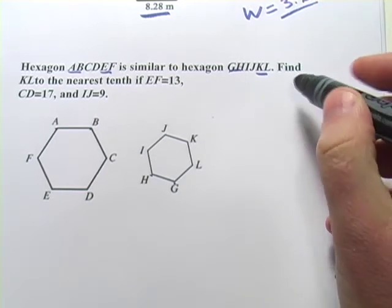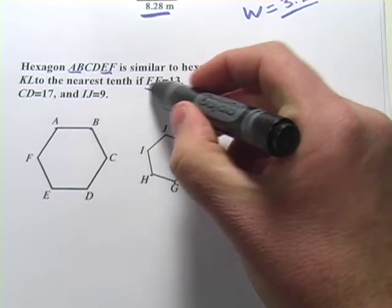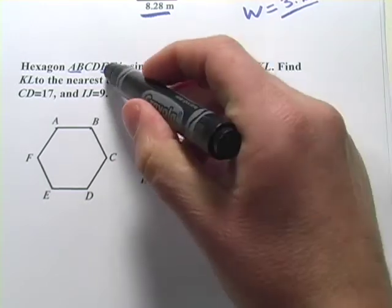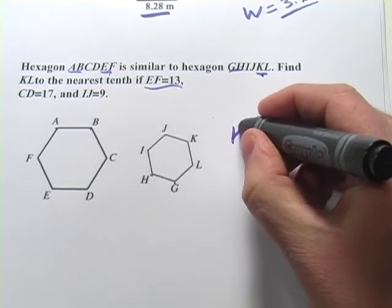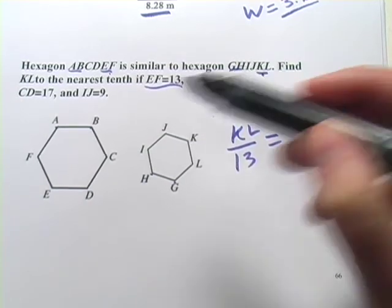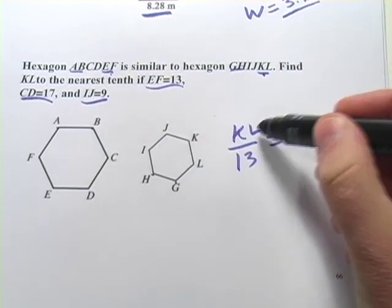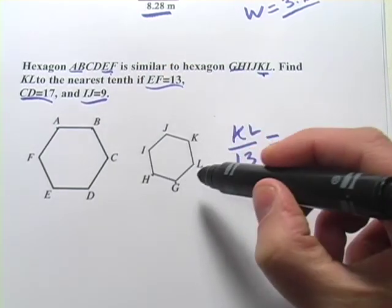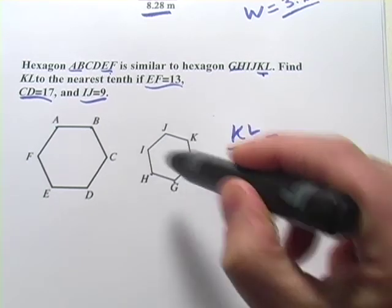Let's take a look at this question. It says find KL to the nearest tenth if EF is 13. And we just said KL and EF are corresponding, so let's make a ratio out of that. KL is to 13, that's EF, as, and now they've given us two other sides, CD and IJ. Well, I used KL, so that's from this hexagon on top, so I have to use the side from this other side from this hexagon on top. That's IJ. That's nine.